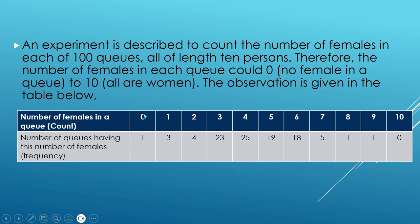The table shows that there is just one queue where there is no female, meaning all persons are male. There are 3 queues with only one woman, 4 queues with two women, 23 queues with three women, 25 queues with four women, 19 with five women, 18 with six women, 5 with seven women, 1 with eight women, 1 with nine women, and no queue has all ten women. This is the data given to us.